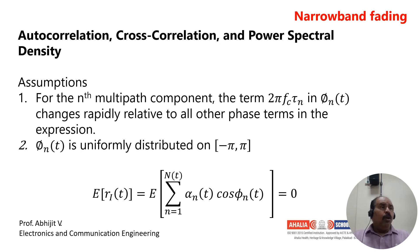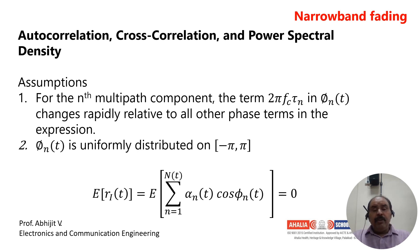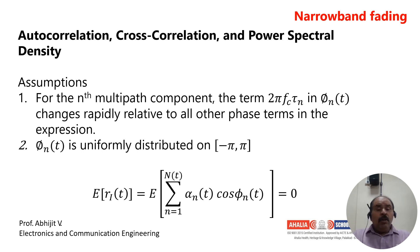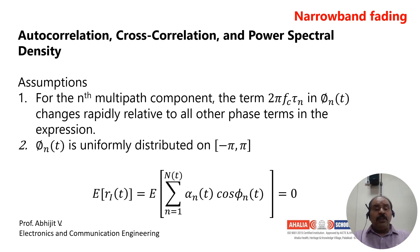Next: autocorrelation, cross-correlation, and power spectral density. In order to derive the equations for autocorrelation, cross-correlation, and power spectral density, we have the following assumptions. First, for the nth multipath component, the term 2π f_c tau_n in phi_n(t) changes rapidly relative to all other phase terms in the expression.